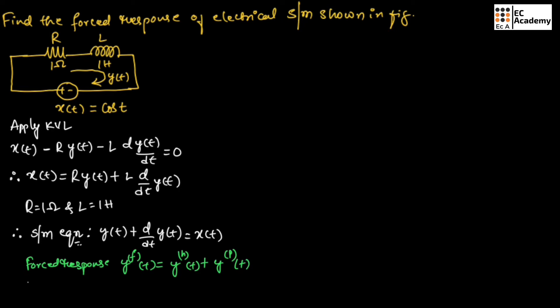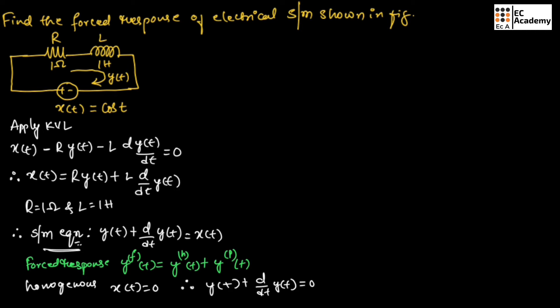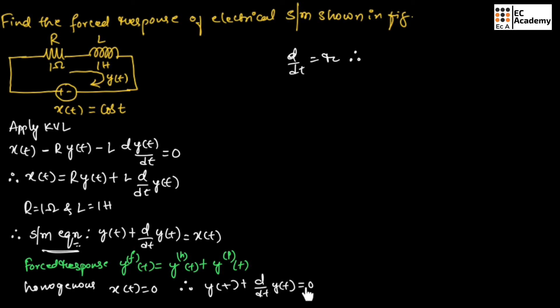To get the homogeneous equation, we will take x(t) is equal to 0. Therefore, we can write the system equation as y(t) plus d/dt·y(t) is equal to 0. Now, let us put d/dt·y(t) as r. Therefore, we can write this equation as r plus 1 is equal to 0. From this, we can say r is equal to minus 1.